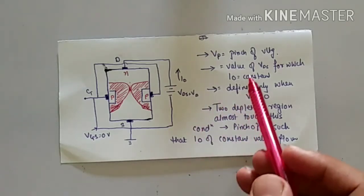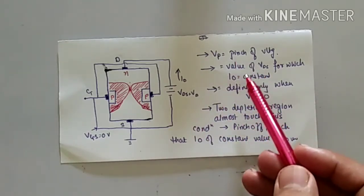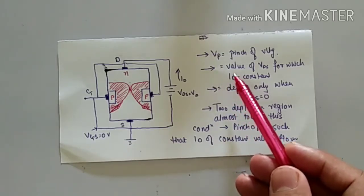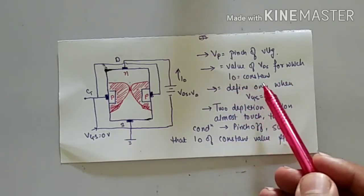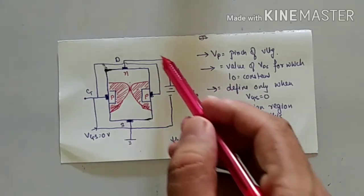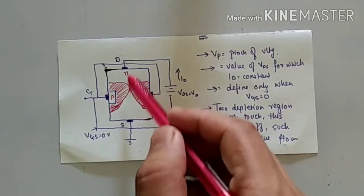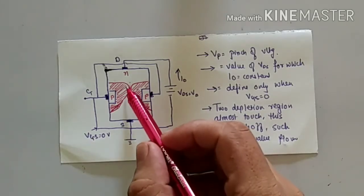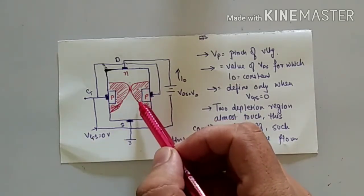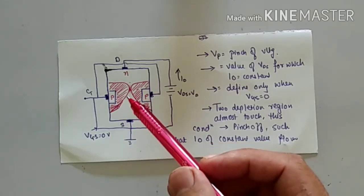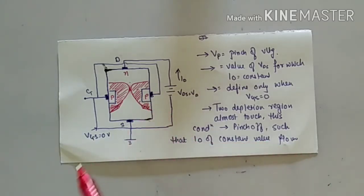This voltage is known as pinch-off voltage. We can say that the definition of pinch-off voltage is the value of VDS for which ID equals a constant. This means a constant current will flow from this region. You can see that this is a taper-type diagram — suppose we are pinching with two fingers when we pinch — so this shape is known as a pinch type, which is why the name is pinch-off voltage.